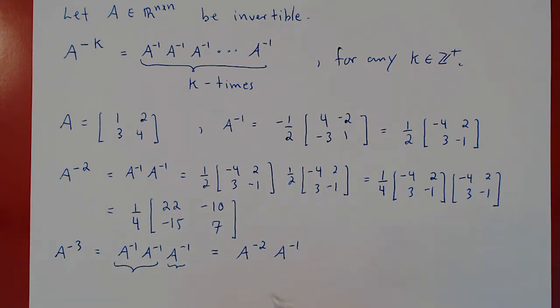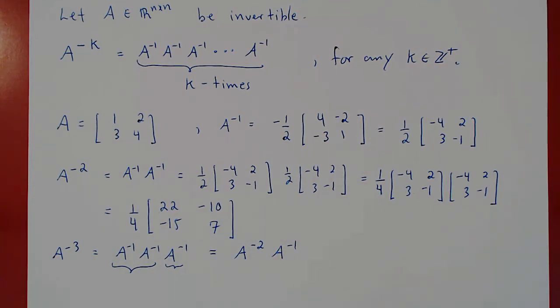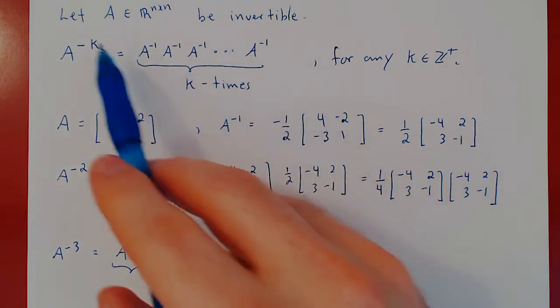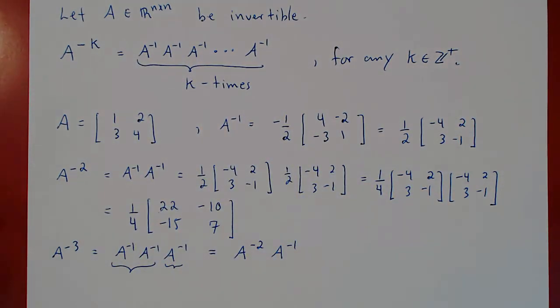I will leave the calculations up to you, and that's basically it. This is how you can take negative integer powers of an invertible matrix. Simply multiply A inverse k times with itself. And that's it.